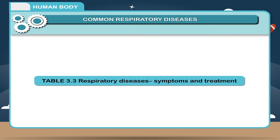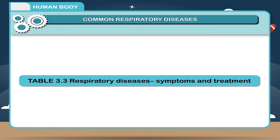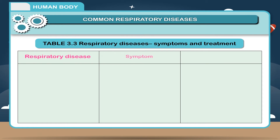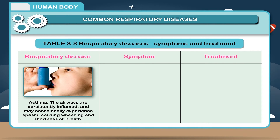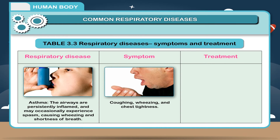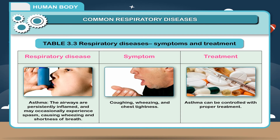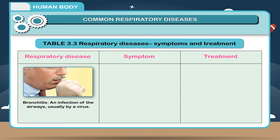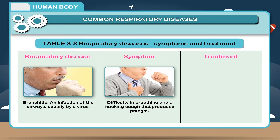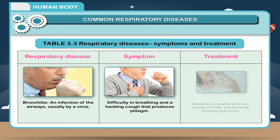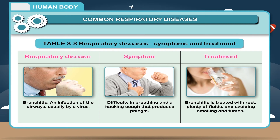Respiratory Diseases — Symptoms and Treatment. Asthma: The airways are persistently inflamed and may occasionally experience spasms, causing wheezing and shortness of breath. Symptoms include coughing, wheezing, and chest tightness. Asthma can be controlled with proper treatment. Bronchitis: An infection of the airways, usually by a virus. Symptoms include difficulty in breathing and a hacking cough that produces phlegm. Bronchitis is treated with rest, plenty of fluids, and avoiding smoking and fumes.